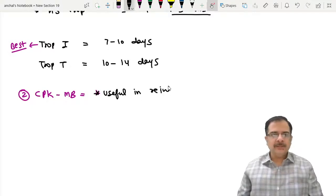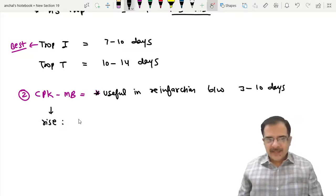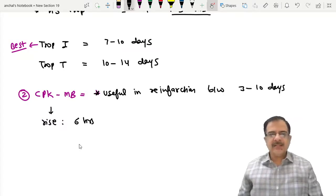Re-infarction between 3 to 10 days. CPK-MB rises within 5 to 6 hours and normalizes in three days.